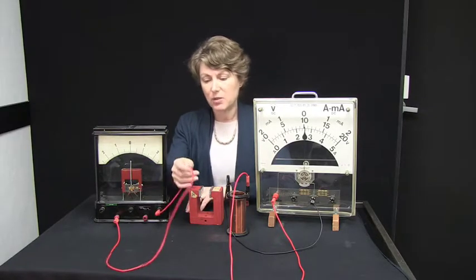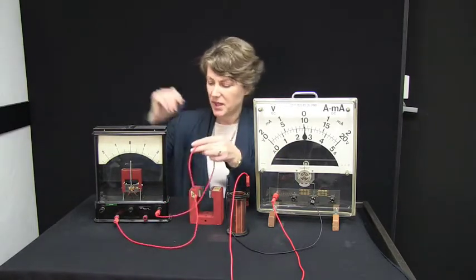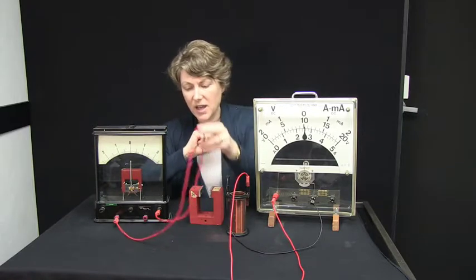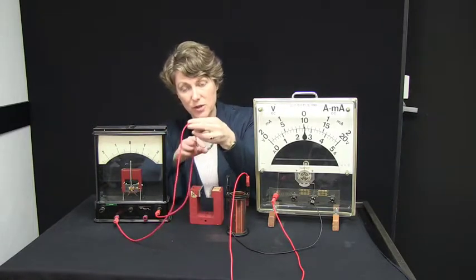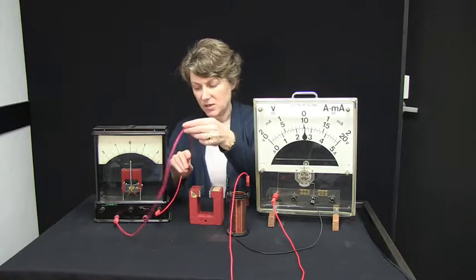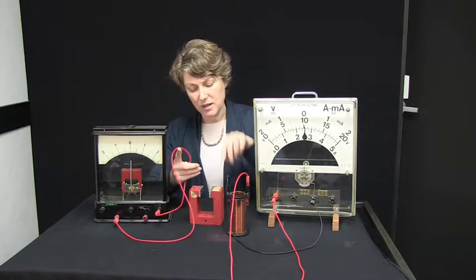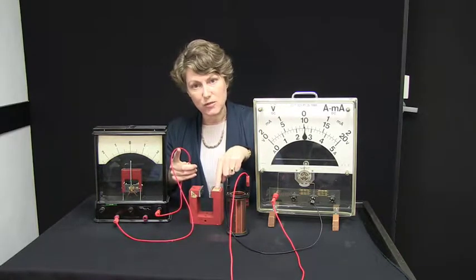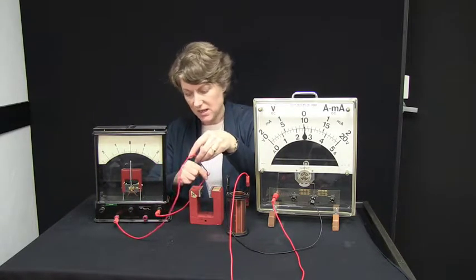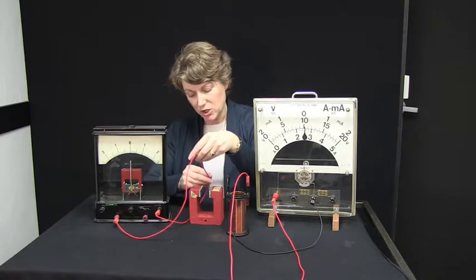So let's have a look at a really simple example. Attached to this little ammeter I have one simple loop of wire. And let's have a look at what happens if I move that wire into and out of this magnetic field. So let's have a look at what the reading shows.